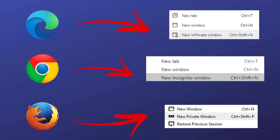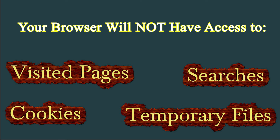Private browsing has a lot of names, including InPrivate in Microsoft Edge, incognito mode in Google Chrome, and private window in Firefox. Its purpose is to give your browser temporary amnesia. Whenever you're in incognito mode, the browser will not store the data of the sites you visited — no addresses, no cookies, none of the data you entered. Nothing.